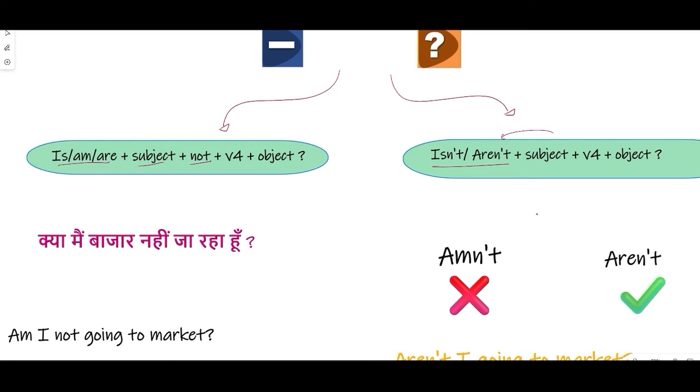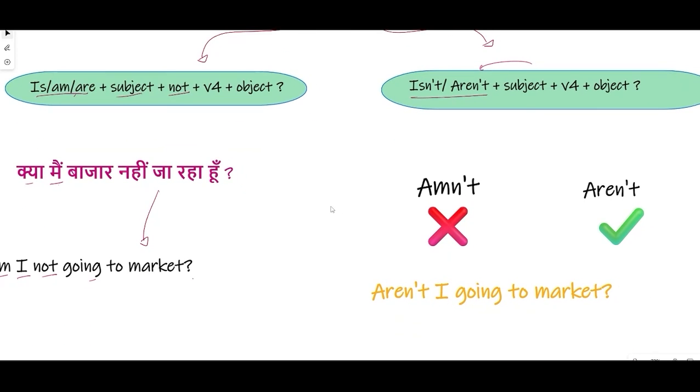Am I not going to the market? If we want to make it negative interrogative, the first way is to write am I not. But remember, we use aren't. The contraction amn't is not used. We don't use amn't, so you should use aren't I. The correct way is: Aren't I going to market? So this will be correct, rather than amn't I going to market, which is wrong.